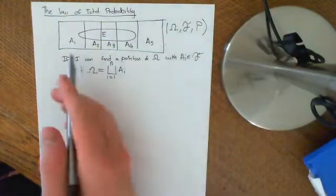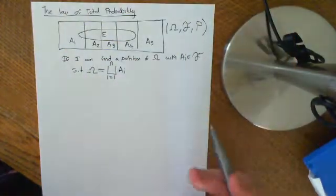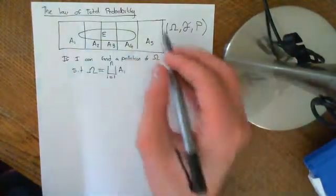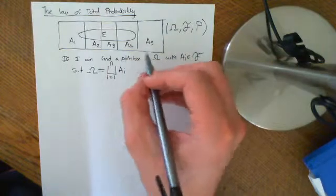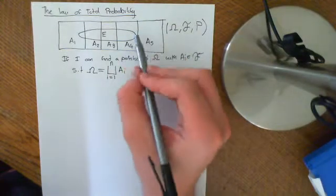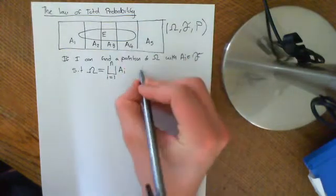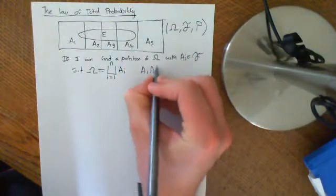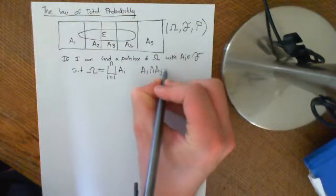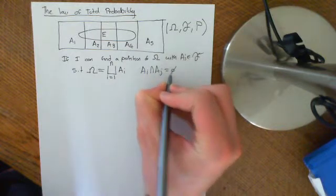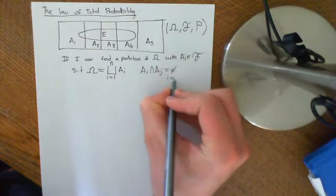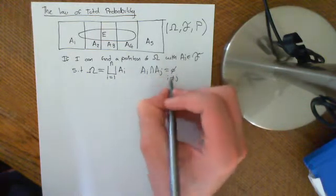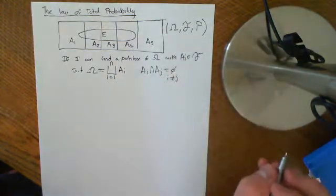Just as I've drawn there, I've split it into five pieces, and the whole sample space is covered by these. Their intersection — if I intersect Ai with Aj — is equal to the empty set if i ≠ j, so they are pairwise disjoint.